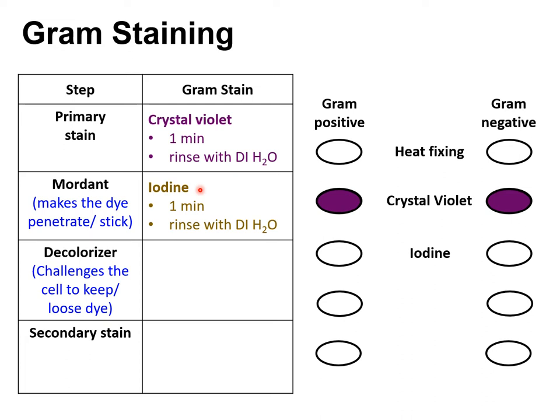The iodine mixes with the crystal violet and creates large crystallized particles, helping the crystal violet penetrate into the bacteria cell and making it hard for the crystal violet to be washed off. We usually leave the iodine on our smear for about a minute and then rinse with water. By the end of this step, both gram positive and gram negative bacteria are still purple.